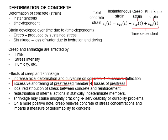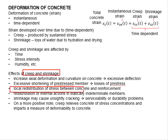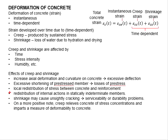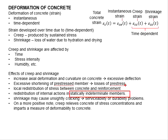Creep and shrinkage can also lead to excessive shortening of the pre-stressed member, which amplifies the losses of the pre-stressing load. They also lead to local redistributions of stress between the concrete and reinforcement, as well as redistributions of internal actions in statically indeterminate members. Excessive redistribution is not desirable, especially when the final distributions are not in line with the design, potentially leading to local damage that spreads to other areas.